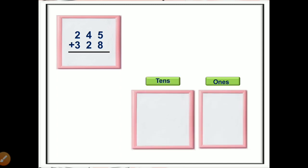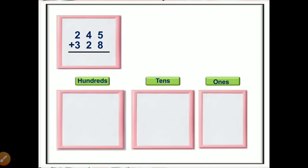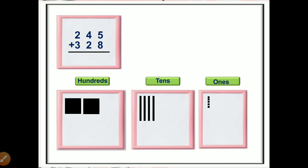tens place, and hundreds place. In the number 245, the digit in the hundreds position is 2, so we will represent it with two bigger square blocks. The digit in the tens position is 4, so we will represent it with four sticks. The digit in the ones position is 5, so we will represent it with five small square blocks.